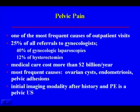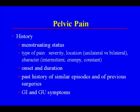The initial imaging modality after a good history and physical is pelvic ultrasound. A good history should be obtained: the menstruating status, the type of pain, if it's severe, the location — unilateral versus bilateral — the character of the pain, if it's intermittent or crampy or constant. The onset and duration of pain is important. Past history of similar episodes and of previous surgeries is also important information.